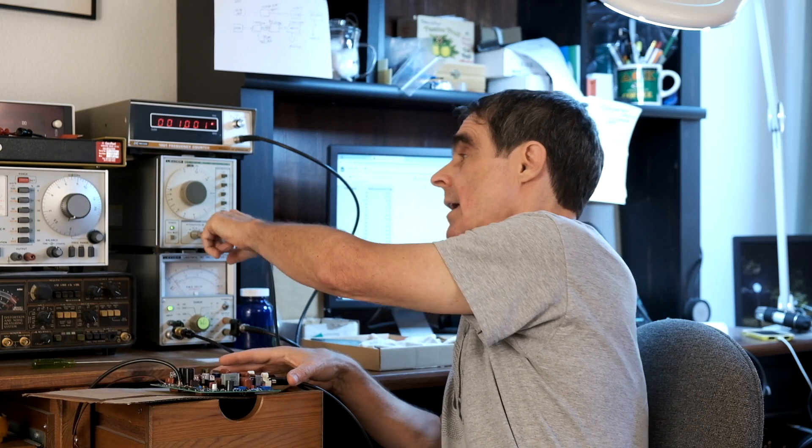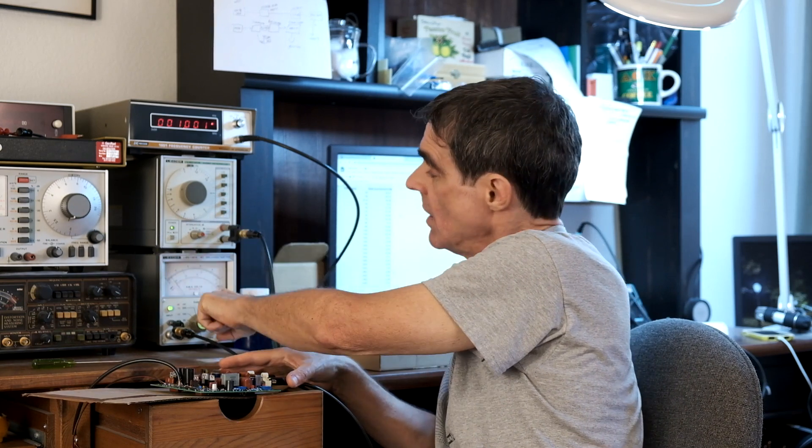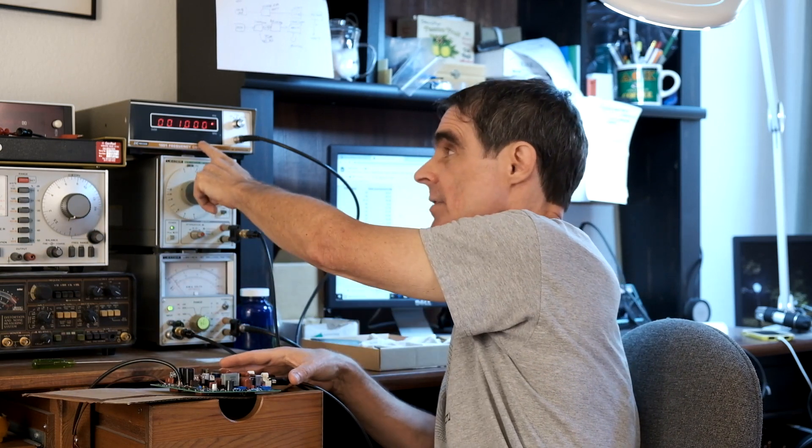So what I have here is the unit hooked up to a function generator, a millivoltmeter, and a frequency counter. And the first thing I do to adjust the frequency response is get a one kilohertz signal running at a relatively high level to adjust for the high frequency response.